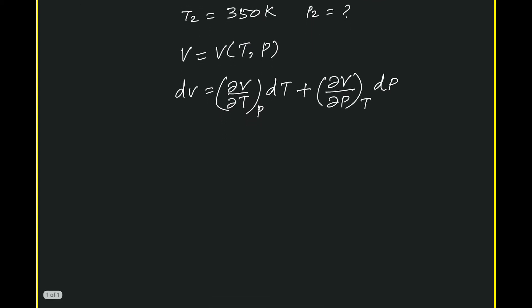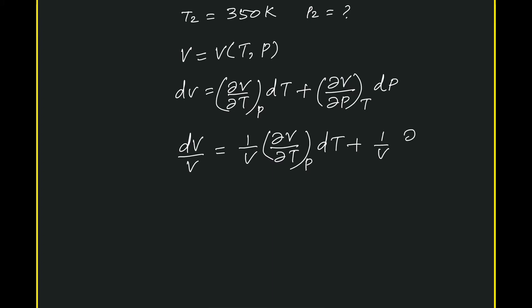Let us divide this entire equation by V so as to substitute in terms of β and κ. So dV/V = (1/V)(∂V/∂T)_P dT + (1/V)(∂V/∂P)_T dP. You know this group (1/V)(∂V/∂T)_P is called β, and this (1/V)(∂V/∂P)_T is actually -κ, which is coefficient of volume expansion and isothermal compressibility.